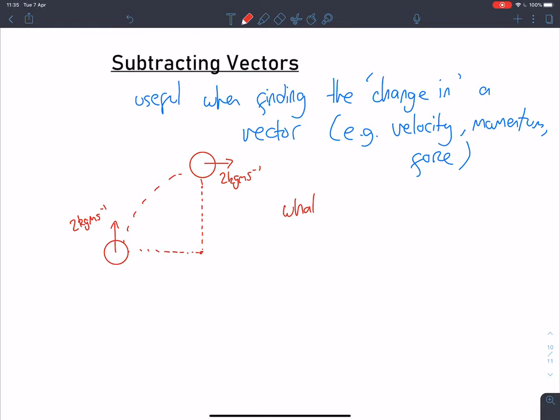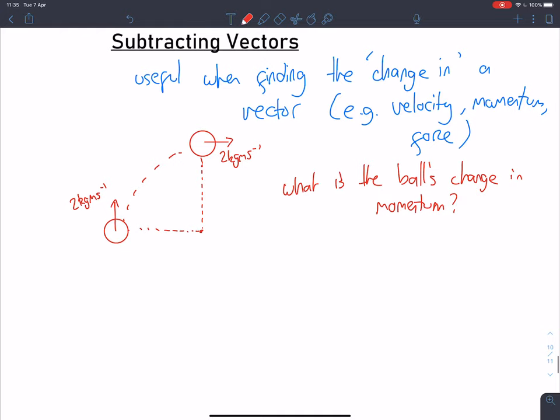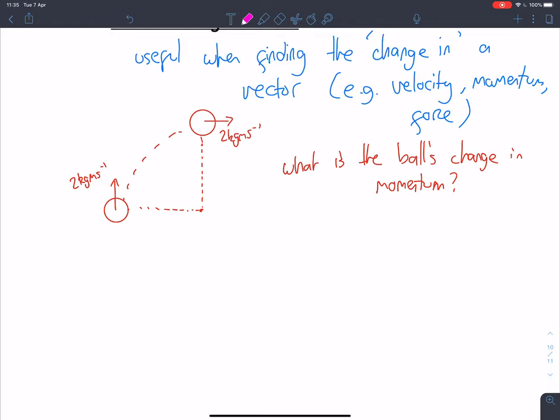What is the ball's change in momentum? How are we going to find this? I'm going to give you a technique for how we can do vector subtraction.